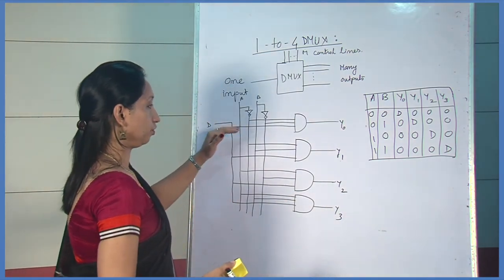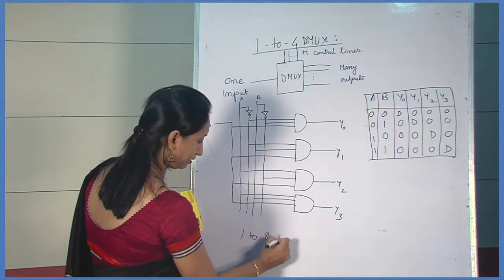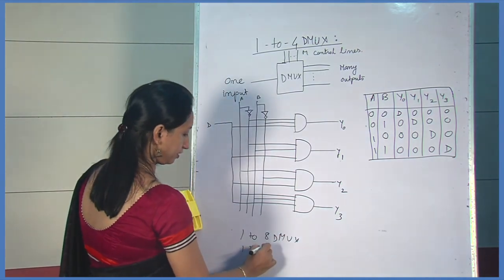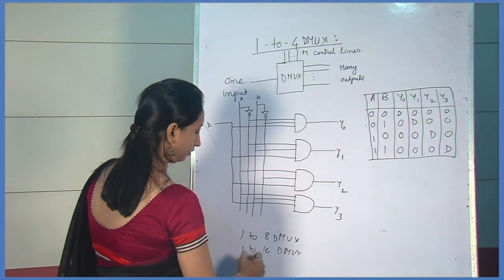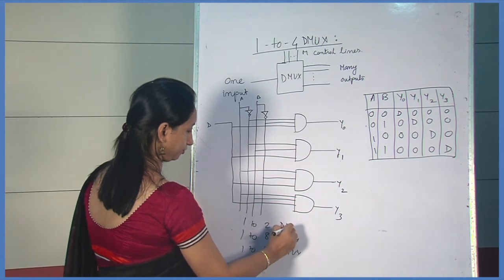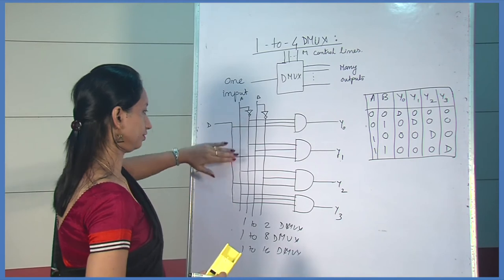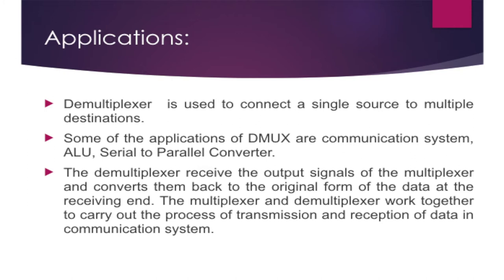Similarly, the same concept applies and we can draw the 1-to-8 or 1-to-16 demultiplexer. Demultiplexer is used to connect a single source to multiple destinations. Some applications of the demultiplexer are communication systems, arithmetic logic units, and serial-to-parallel converters. At the receiver end, the demultiplexer converts the output signals back to the original form of the data. Multiplexer and demultiplexer work together to carry out the process of transmission and reception of data in a communication system.